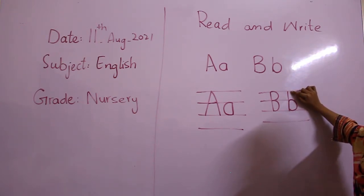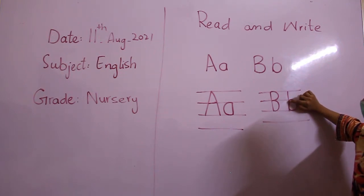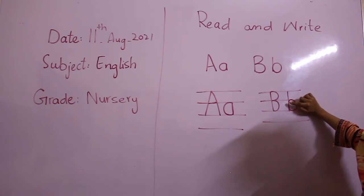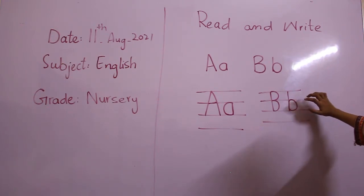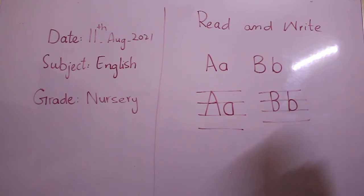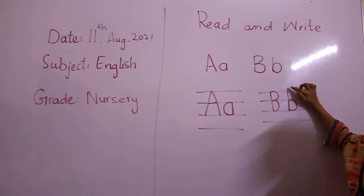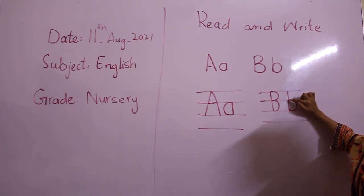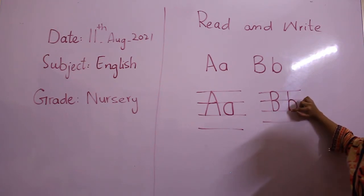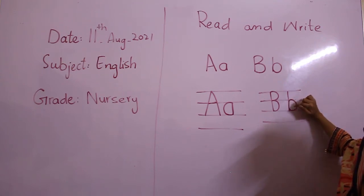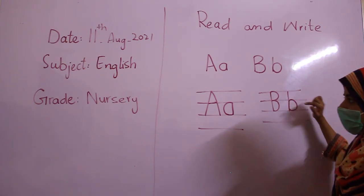How to write capital A: we use the first line, then go down to the second line, then down to the third line. Then go up to the second line, then turn around and come down to the third line.